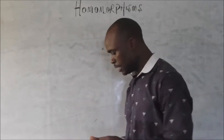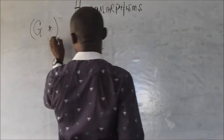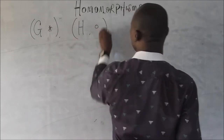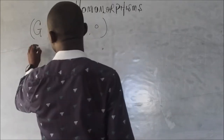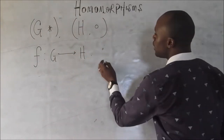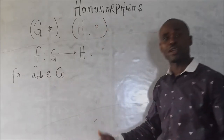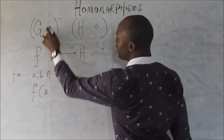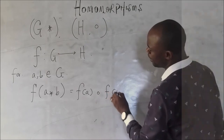What do I mean by homomorphism? If we have two groups — let me say G with binary operation star, and H with another binary operation O — what we mean by homomorphism is that if we map G to H, then for two arbitrary elements A and B in G, we must find that F of A star B is the same thing as F of A circle F of B.